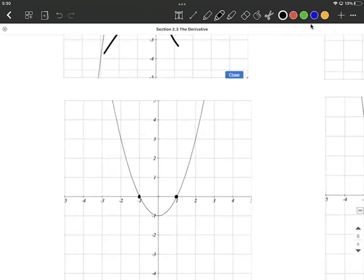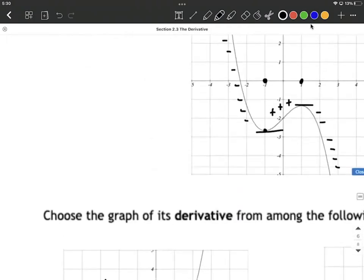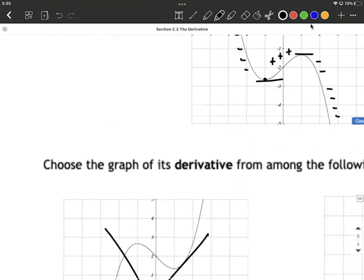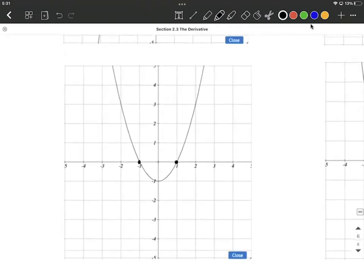But remember what we said about increasing and decreasing. Decreasing to the left, increasing in the middle, decreasing on the right. Decreasing on the left meant we can only be drawing below the x-axis here, above the x-axis in the middle, and below the x-axis on the right side. So this one's out as well.